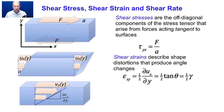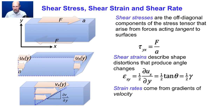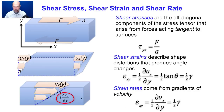In fluid flows, gradients of velocity give rise to the strain rate tensor. The strain rate component epsilon-dot_xy is one-half of del_vx/del_y, which is also one-half of gamma-dot, known as the shear rate.